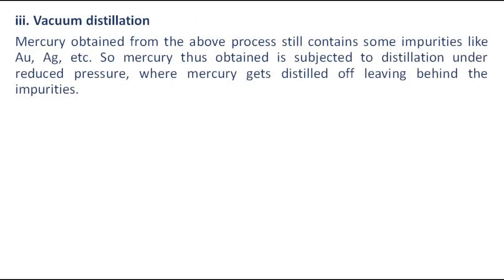Vacuum distillation: Mercury obtained from the above process still contains some impurities like gold, silver, etc. So mercury thus obtained is subjected to distillation under reduced pressure, where mercury gets distilled off, leaving behind the impurities.